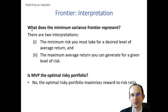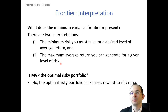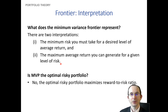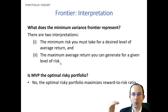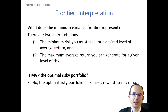The minimum variance frontier can be thought of in two ways: it tells us the minimum amount of risk you must take to achieve a certain level of return, or alternatively the maximum return you could get for a certain level of risk. The interior portfolios are less attractive because for any level of risk you can always move to the edge of the frontier to get more expected return, or reduce risk while maintaining your target return.